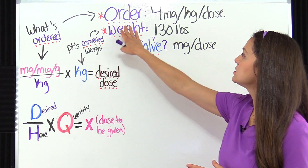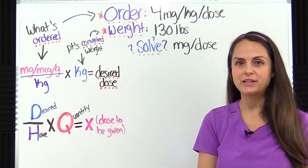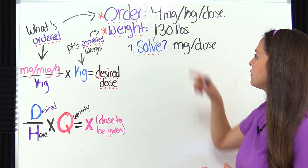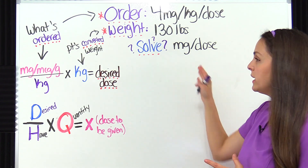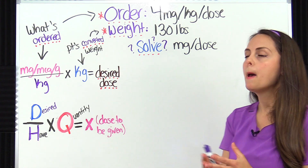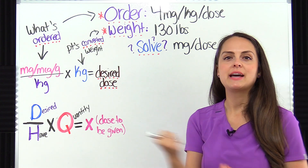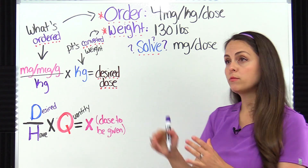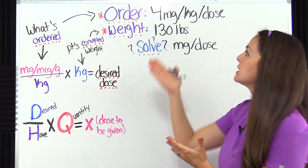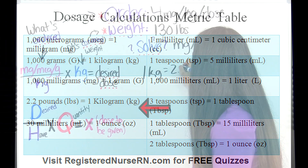Our problem says that the physician has ordered four milligrams per kilogram per dose for a patient, and it tells us that our patient weighs 130 pounds. So what we need to solve for is how many milligrams per dose should this patient be receiving based on their weight and what was actually ordered. So the first thing I need to do is convert this patient's weight from pounds to kilograms, because we're working with kilograms. From the metric table, we know that one kilogram equals 2.2 pounds.